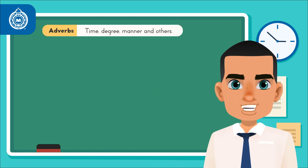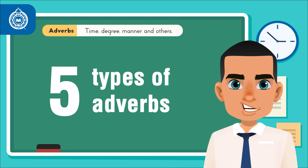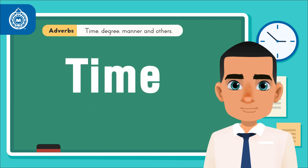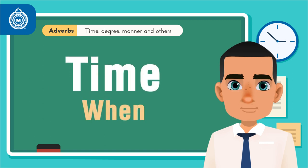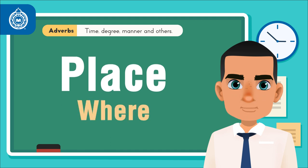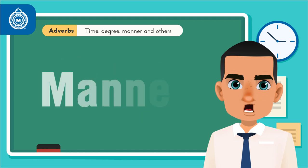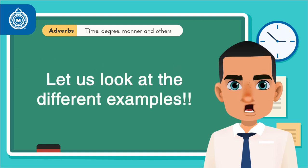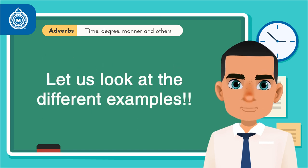There are five types of adverbs. You have adverbs of time — when; place — where; manner — ending in -ly in most cases. Now let us look at the different examples.